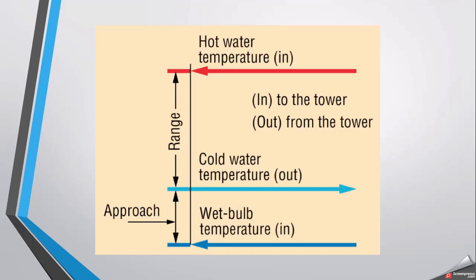This diagram illustrates the hot water temperature entering the cooling tower from a process that carries heat to be dissipated. The cold water temperature is shown going out after cooling. The difference between hot water in and cold water out is called range. The approach is the difference between the cold water outlet temperature and the wet bulb temperature of the air entering the cooling tower.